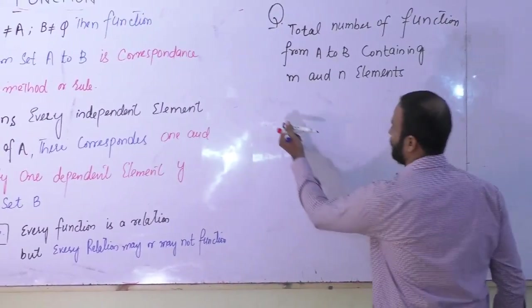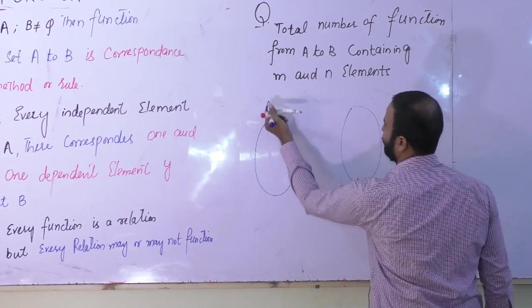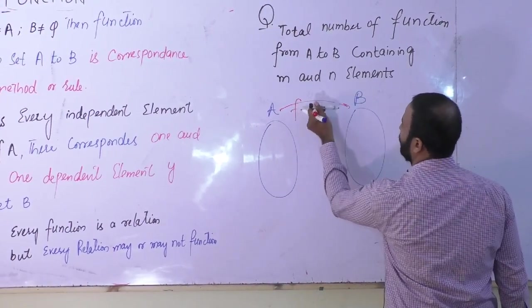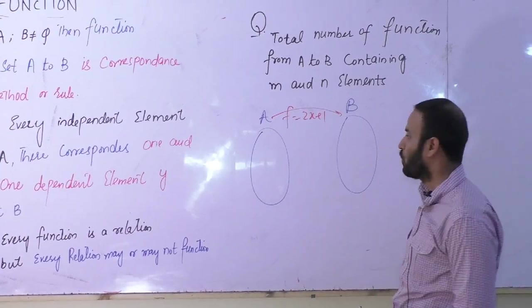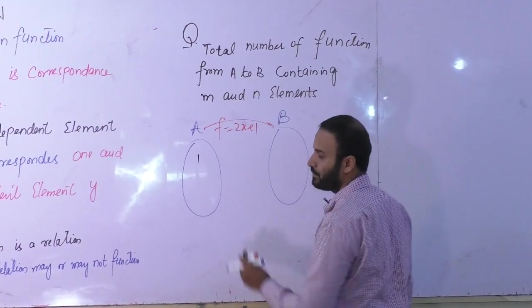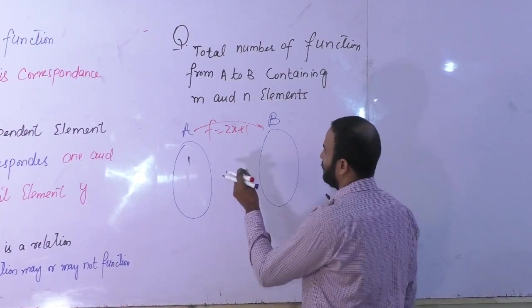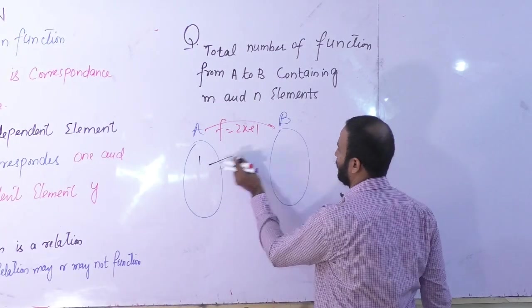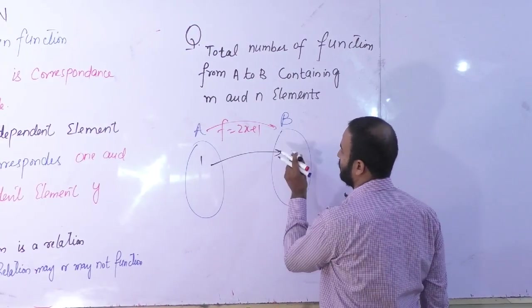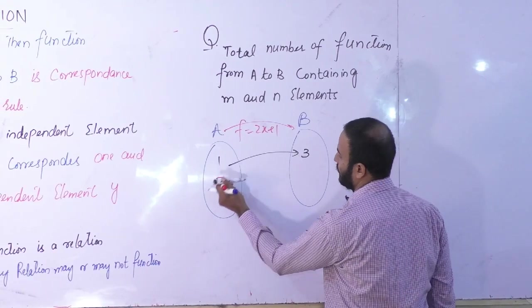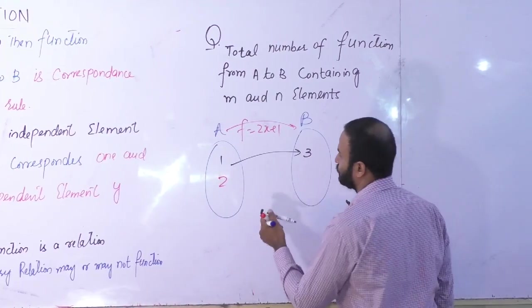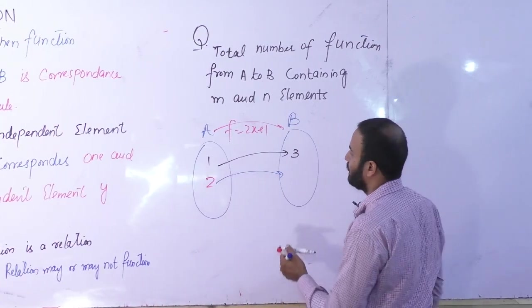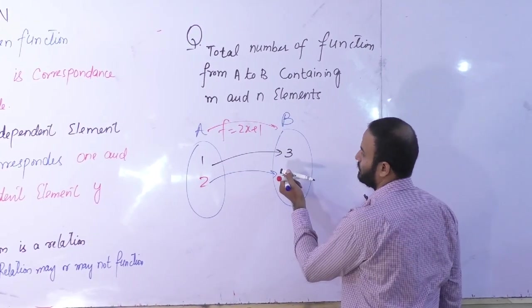I am going to express if there is a set A, there is a set B, there is a function with a rule, let's express 2x plus 1. Take one element of A and apply this rule on this element. So the image will be 2 plus 1, it will be 3. Take another element 2. So under this rule, or correspondence, the image of 2 is 5.